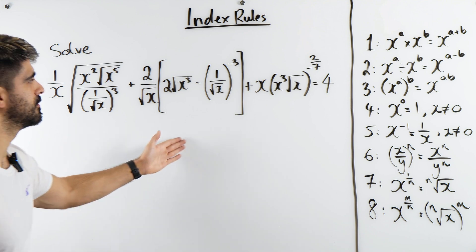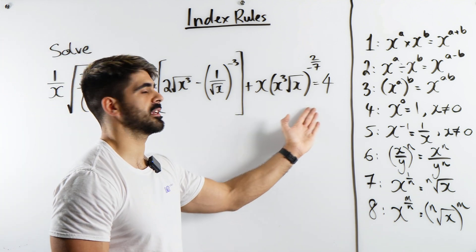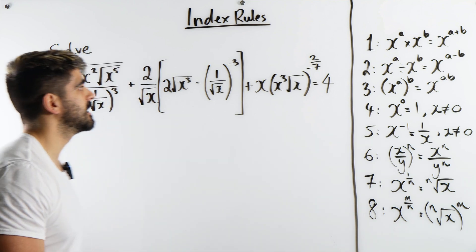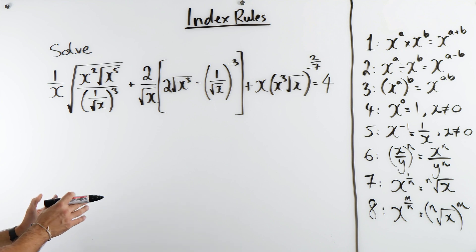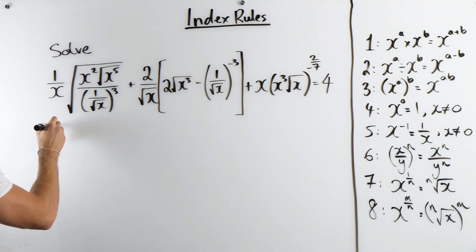So we're going to solve this problem or this really horrible looking thing equals 4. Obviously it's all going to simplify down to something really nice. So let's just go term by term and start cleaning this up. Now for example here 1 over x, I quite like that. I'm not going to do anything there so I'm going to rewrite that 1 over x.